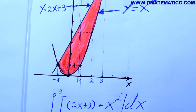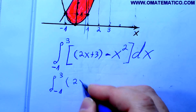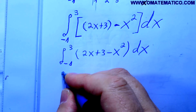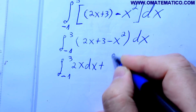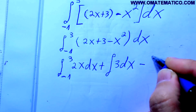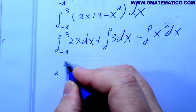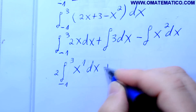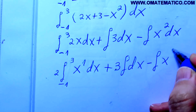dx. Vai ser a integral de menos 1 até 3 da curva superior, que é 2x mais 3, menos a curva inferior, que é x ao quadrado. Essa está em cima e essa limita a parte de baixo, menos x ao quadrado. dx. Temos que resolver este parênteses, então vai ficar integral de menos 1 a 3 de 2x mais 3 menos x² dx. Separando todos eles, vai dar integral de 2x dx mais integral de 3 dx menos integral de x² dx.